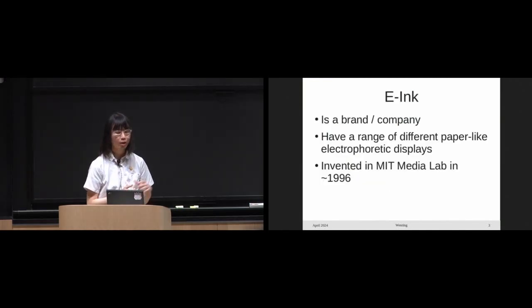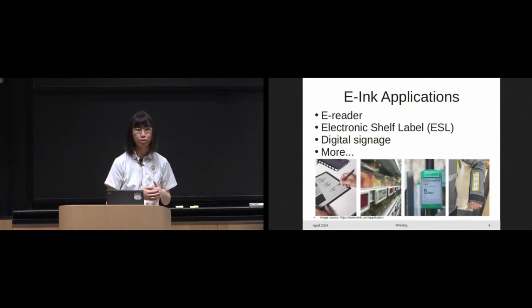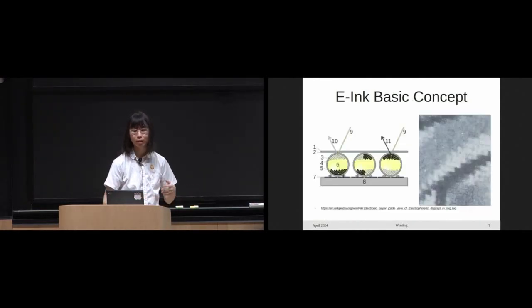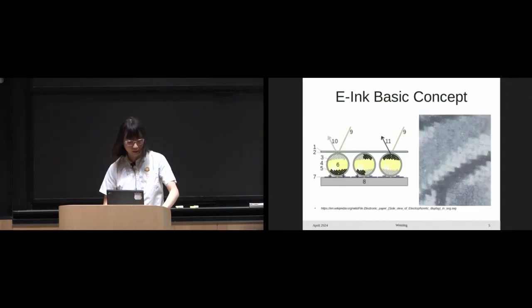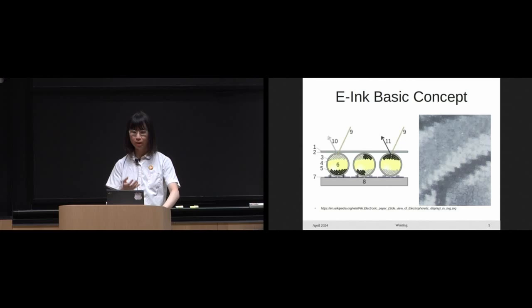E-ink is actually a brand name of a family of paper-like electrophoretic displays. It was invented here in MIT Media Lab decades ago. Nowadays they're commonly used in e-readers, electronic shelf labels. You've probably seen them on Kindles or in the stores or maybe in some train stations as well. The basic concept isn't hard to understand. In the simplest form, you have charged particles with different colors dispersing some oil in some kind of transparent container.